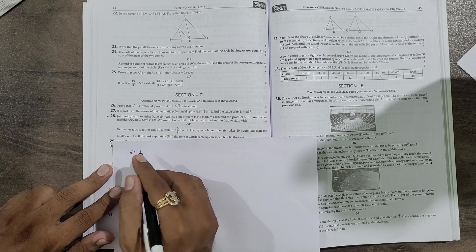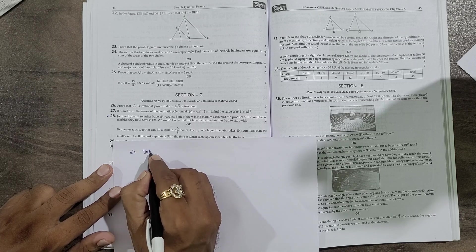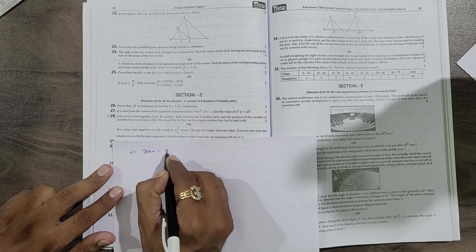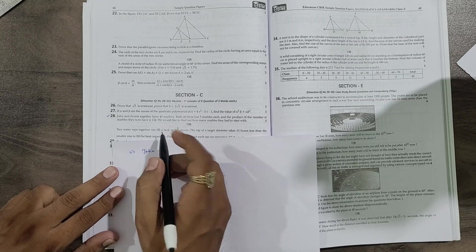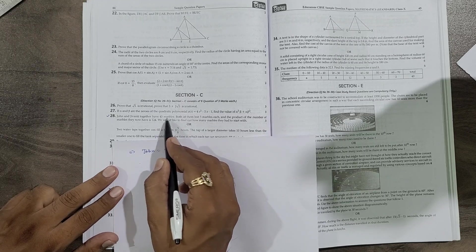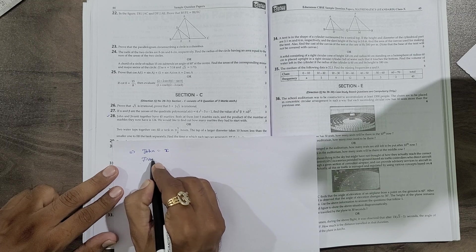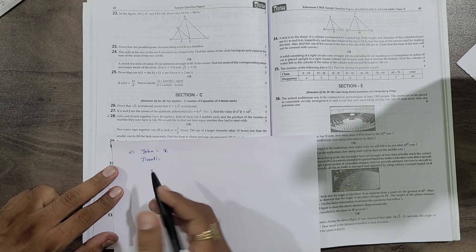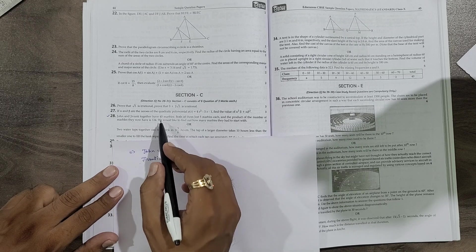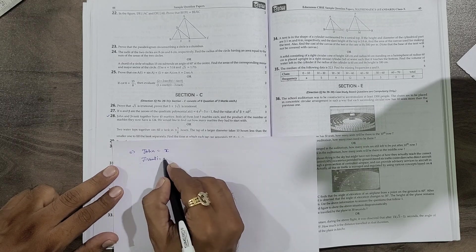So guys, here two persons are there - one is John and Jivanti. Suppose John is having x number of marbles. Now total marbles were 45, so together they were having 45. So how many marbles will Jivanti have? Just you need to subtract x, John's marbles, from the total.